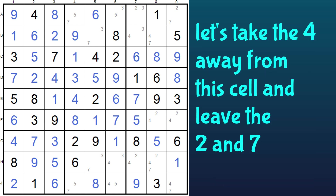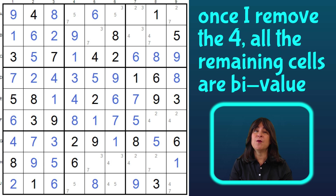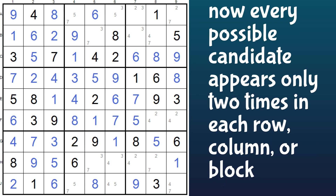Let me take away the third number in this cell, the four, and leave the two and the seven. Now every remaining cell in this grid is binary, or bivalue — has only two possibilities — and this is a problem. You can see that every possible candidate that's left appears only twice in each row, each column, or block.